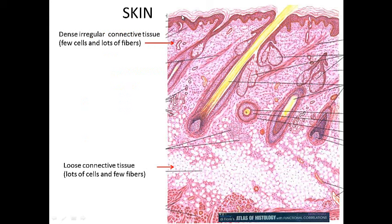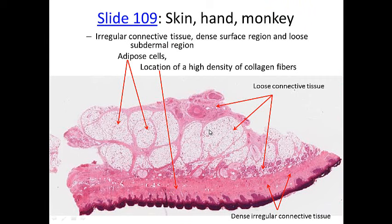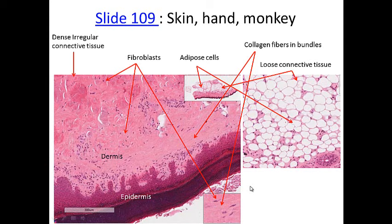Looking at skin: it has an epidermis and a dermis. The dermis is the connective tissue. Right underneath the epidermis you have dense irregular connective tissue — the fibers run in different directions, there are few cells and lots of fibers. If you go deeper to where you have fat, the hypodermis, you can see loose connective tissue with lots of cells and not many fibers. Looking at a piece of skin from a monkey finger, we see loose connective tissue, fat cells, and dense irregular connective tissue.